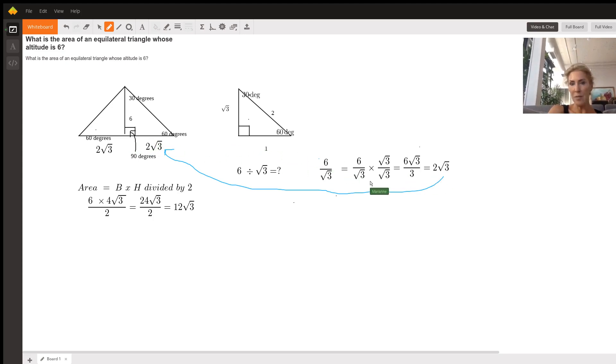So if half of it is two radical three, the other half is two radical three. So what's the length of the entire base? What's two radical three plus two radical three? It is four radical three. So we're going to plug it into our area formula: our base times our height divided by two.